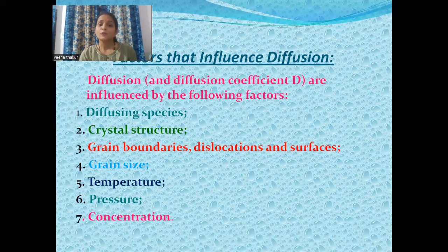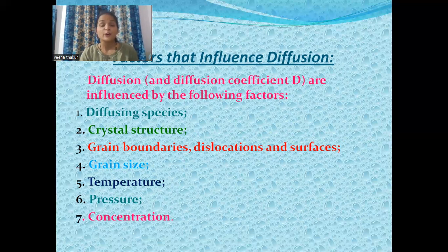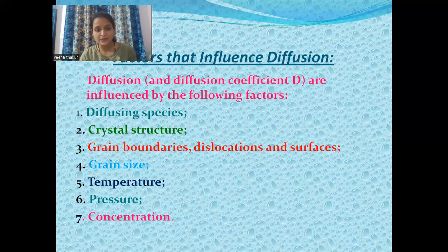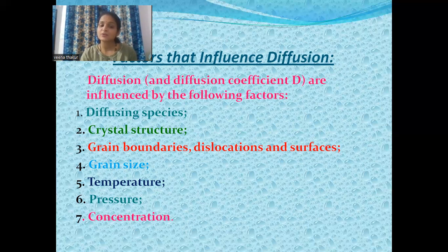Now, what factors influence diffusion? The diffusion coefficient, represented by D, is influenced by the following factors: first, diffusing species; second, crystal structure; third, grain boundaries, dislocations, and surfaces; fourth, grain size; fifth, temperature; sixth, pressure; and seventh, concentration.